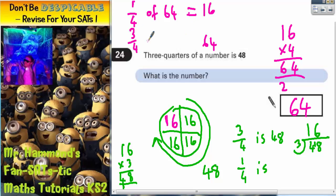So three quarters of 64 must be three of those. Three 16s, we've already got that down here. It's 48. So yes, it does work. Final answer, the mystery number was 64.